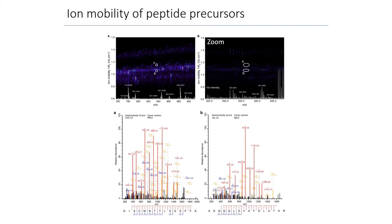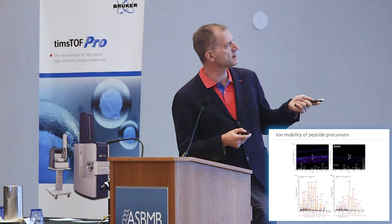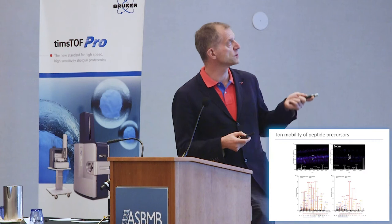Here's an illustration. In the ion mobility dimension and the MS/MS dimension, there are co-eluting ions — precursor ions that have the same mass — that project onto the same precursor in a normal MS spectrum without ion mobility. But now we know this and can catch the ions: one in one scan, another in another scan, giving completely different MS/MS spectra. You can catch both, which would have been hard otherwise — these would have been chimeric spectra.